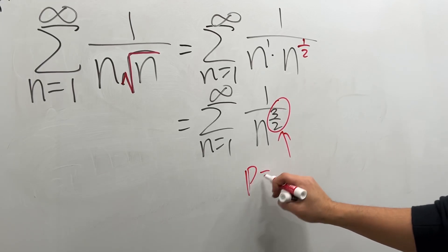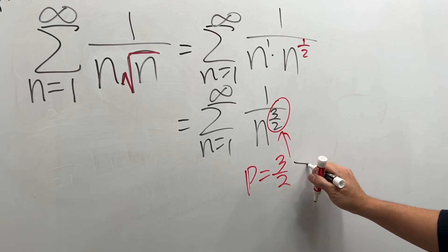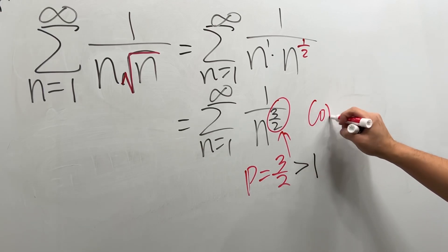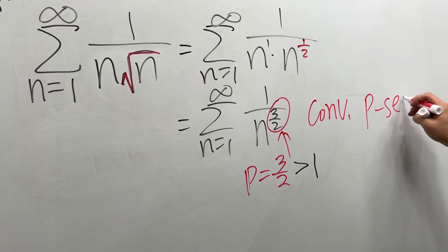p is 3 over 2, which is greater than 1, meaning this converges because it's a convergent p-series.